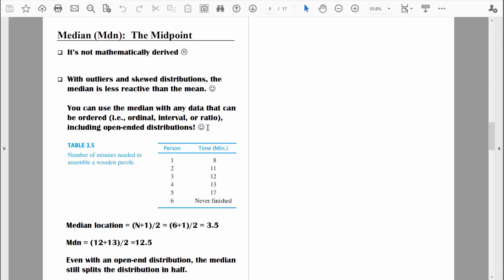Here's another really nice thing. We can use the median with almost any type of data. Any data that can be ordered. So here we're talking about ordinal, interval, or ratio scale data. If we have nominal scale data, we can't order that data. And the best we can do in terms of central tendency is finding the mode. However, with any other type of data, we can order it. Ordinal, interval, or ratio level data can be ordered. And if you can order the data, you can find the midpoint. We can even find the midpoint when we have open-ended distributions. Let me show you what I mean by that.